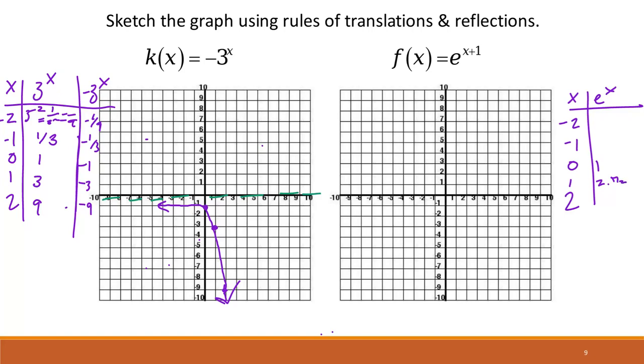And then this is approximately 2.72, right? And then if we did squared, that's approximately 7.39, and so on.